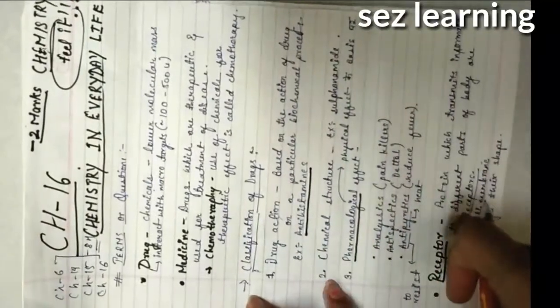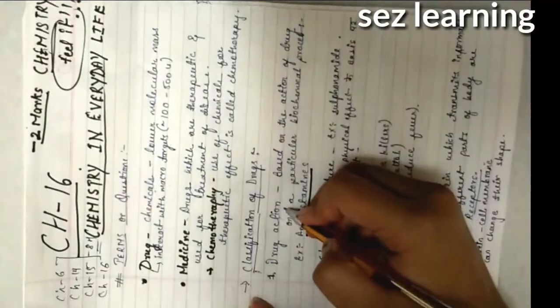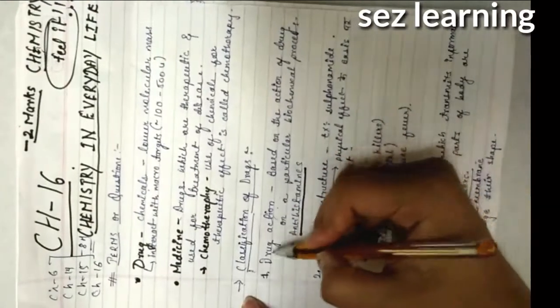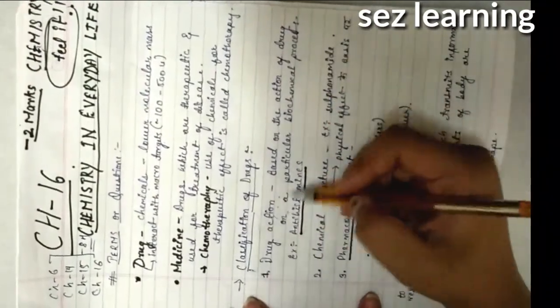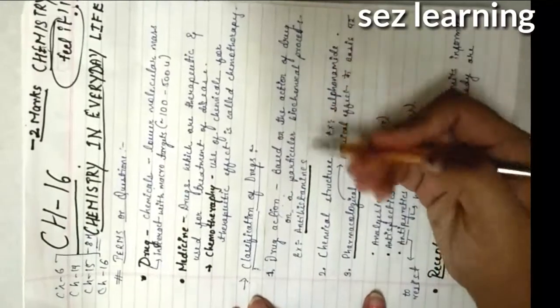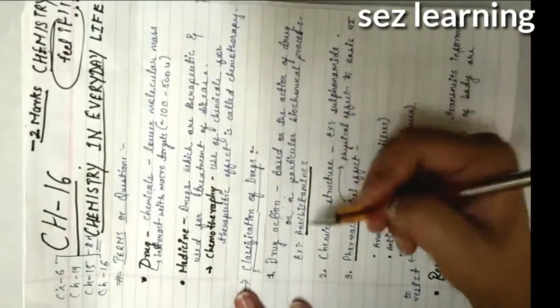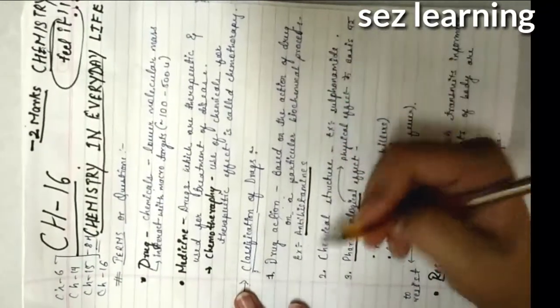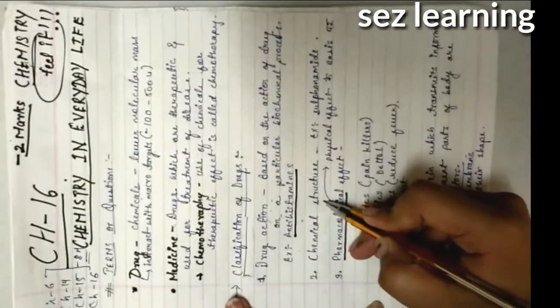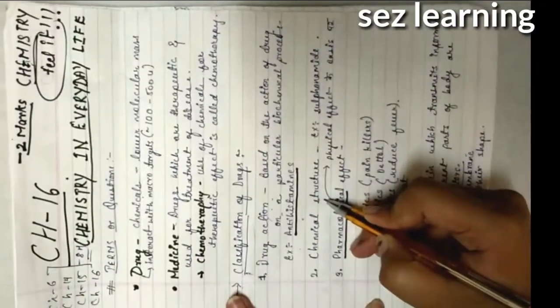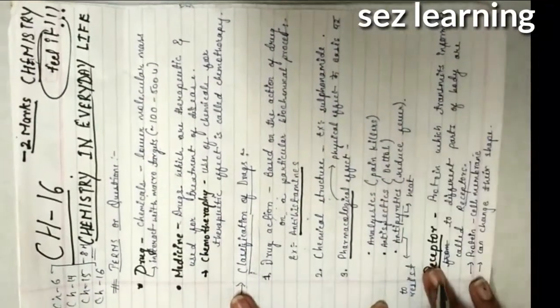Now, classification of drugs. Drugs can be classified in several ways. Number one is based on drug action - based on the action of the drug on a particular biological or biochemical process. Its example is antihistamines. I'll give you examples to remember. Antihistamines work on allergic effects - detail definition later.